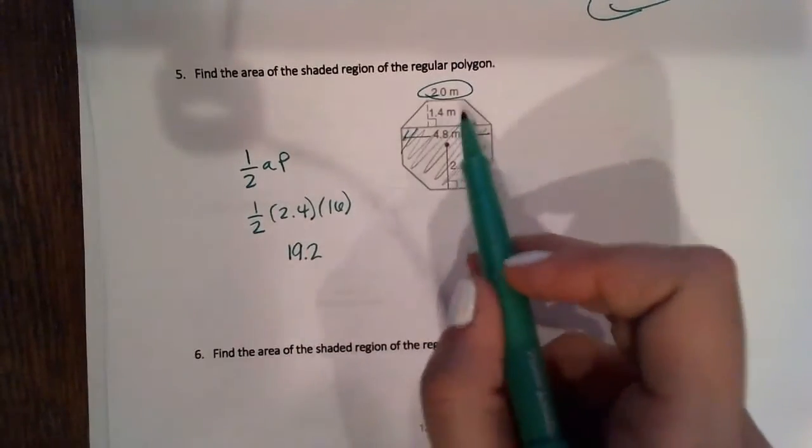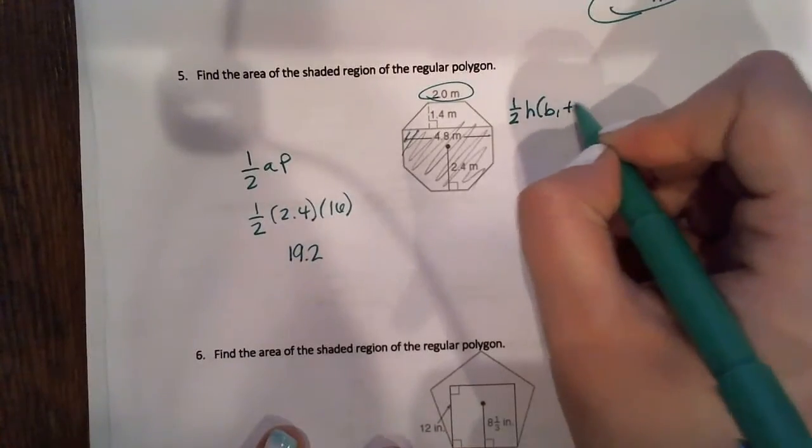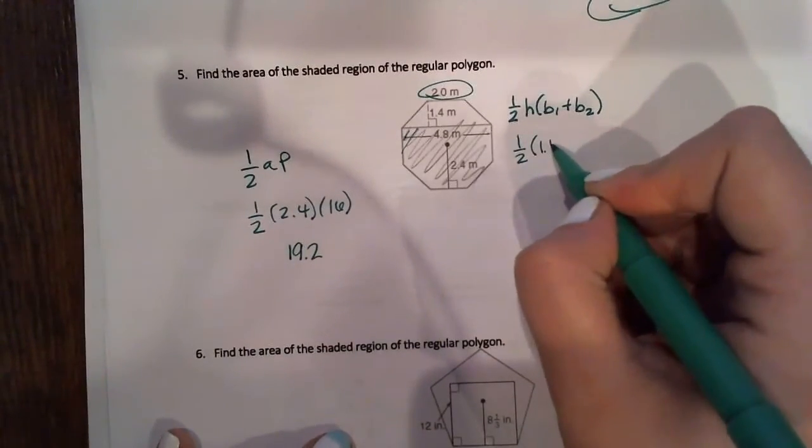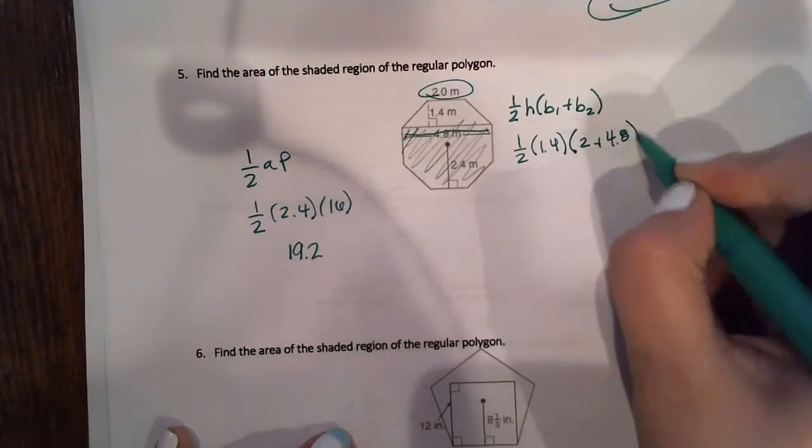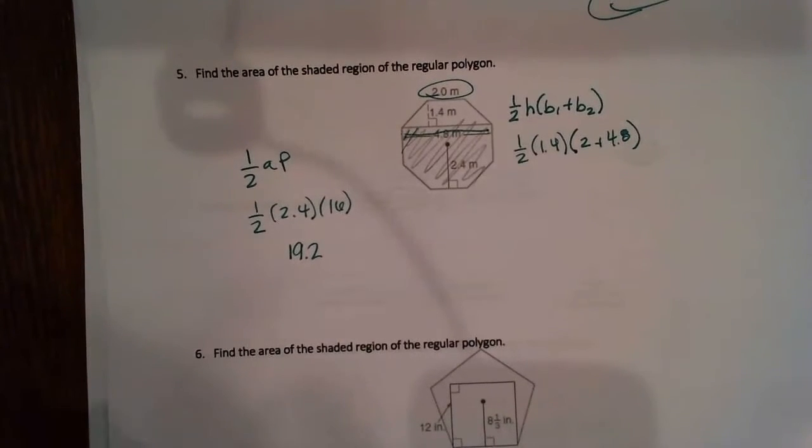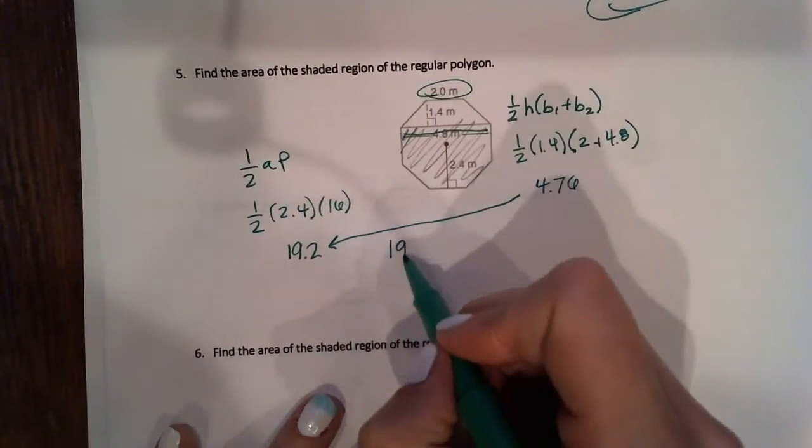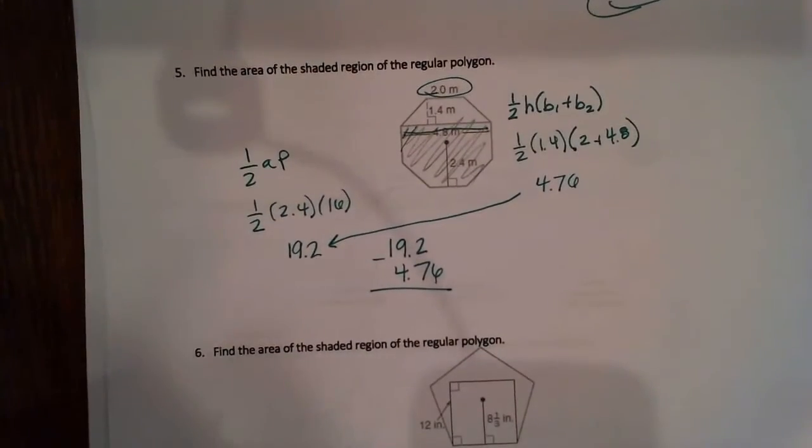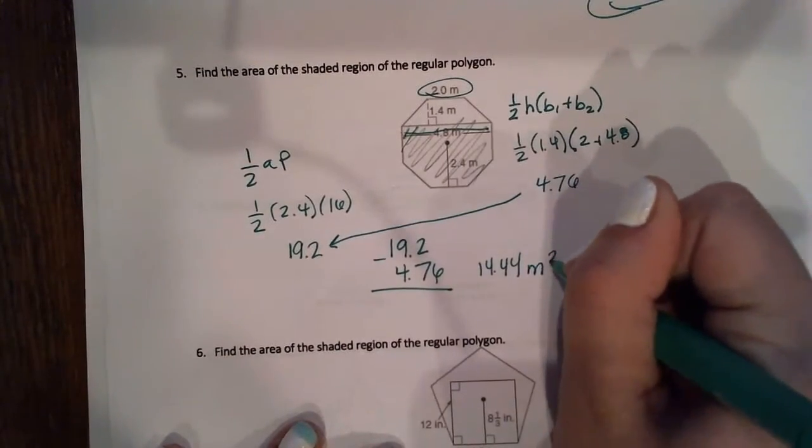Now I have a trapezoid. 1 half base 1 plus base 2, this is the area of a trapezoid. I have 1 half times my height times base 1, 2, plus my second base, 4.8. And I get 4.76. I can take my total area and subtract this unshaded spot, and I get 14.44 meters squared for this shaded spot.